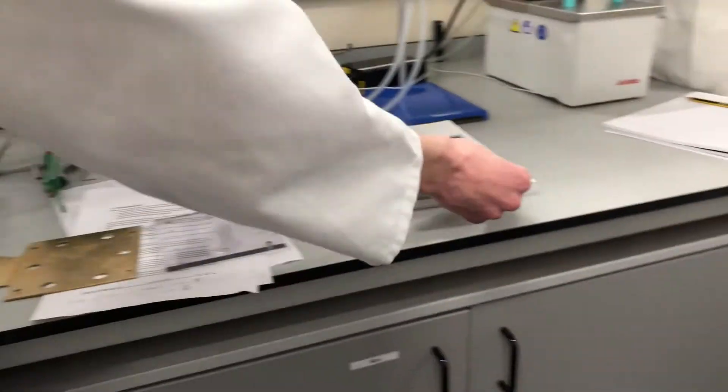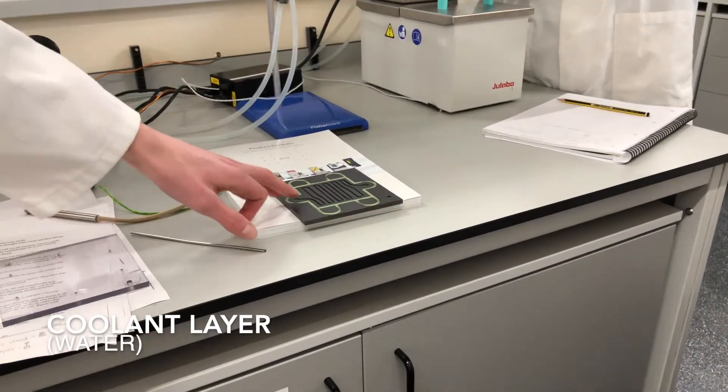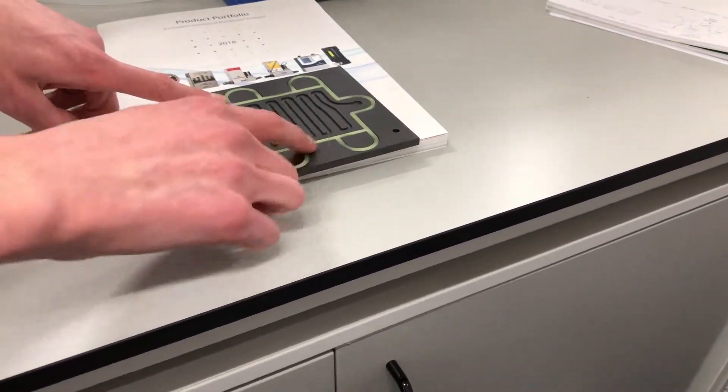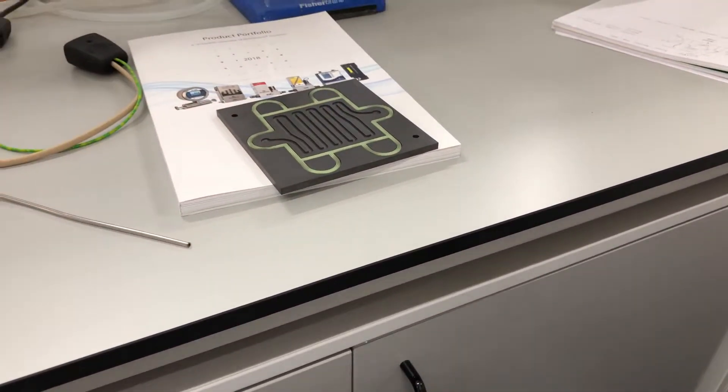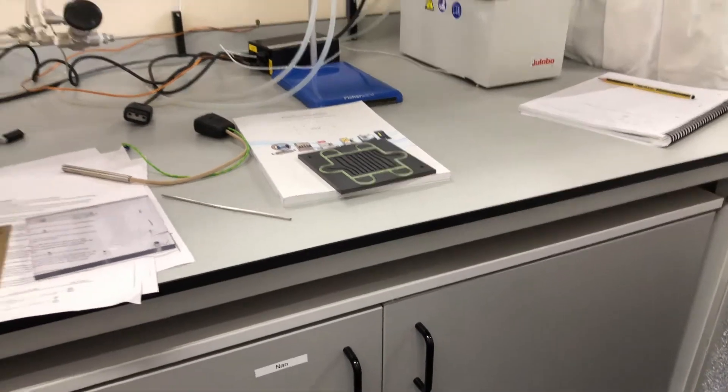So this layer here, you can see there, that's just the coolant water layer and you can see there with the actual sealant rubber rings there. But when you press down on that, it acts as a sandwich between the layers.